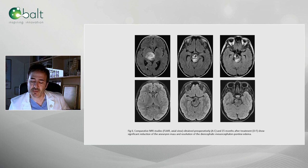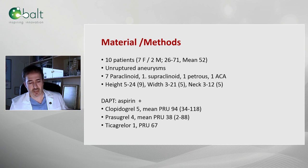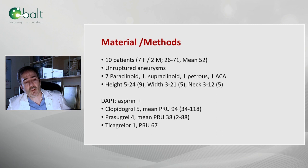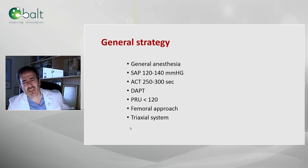In the last month and a half, we treated 10 patients with the Silk Vista flow diverter. All of them are ruptured aneurysms: seven paraclinoid, one supraclinoid, one petrous, and one anterior cerebral artery. Most of them are in the range of between small and giant aneurysms. All were treated with double antiplatelet therapy. Most of them were clopidogrel, four with prasugrel, and one with ticagrelor. Our general strategy is very simple.